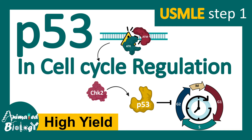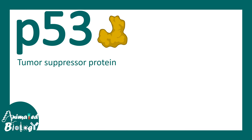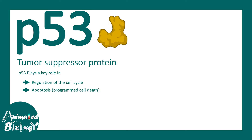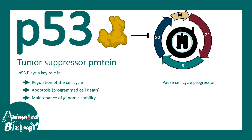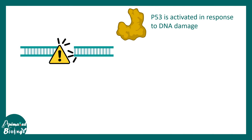In this video, we'll be talking about p53 and its role in cell cycle regulation. p53 is a particular tumor suppressor protein which can pause the cell cycle. p53 plays a key role in regulation of the cell cycle, apoptosis, and maintenance of genomic stability. The questions are: why does p53 pause cell cycle progression, why should it pause the cell cycle, how can it pause the cell cycle, and what is the consequence? We will understand all of this in this video.